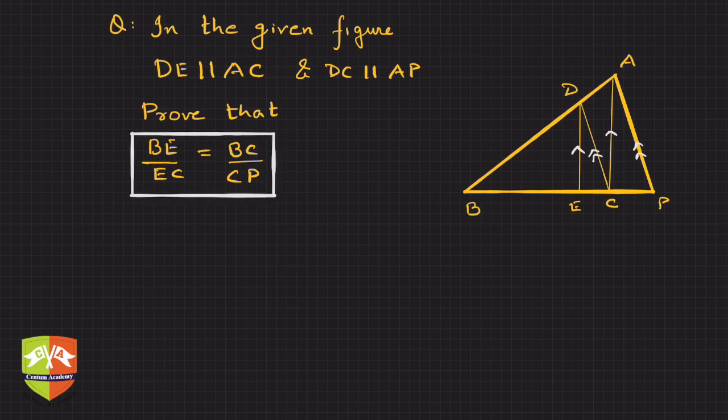Again, if you see there is a triangle, there are parallel lines, and ratios are involved. So what comes to mind first? That's nothing but the Basic Proportionality Theorem, right?